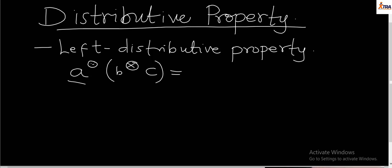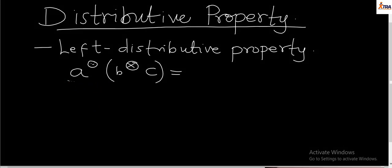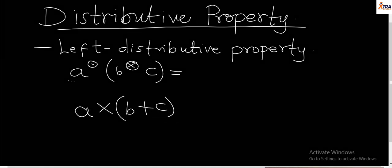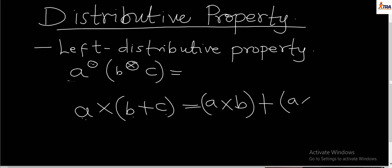Consider something like a times (b plus c). In our process of using these two basic operations, when we actually want to open up brackets and go into an expansion process, we basically say a times b plus a times c. So it is an expansion process, and that is what distributivity is. The only thing is that the times and plus are not the operations we use in this case — we use any other operations — but we follow the same principle.